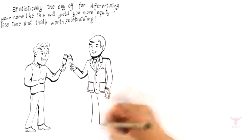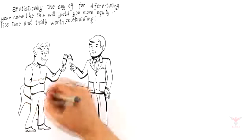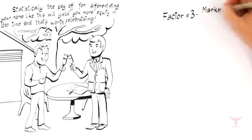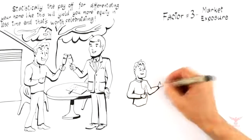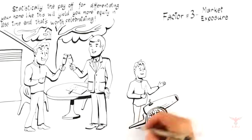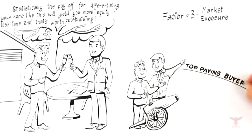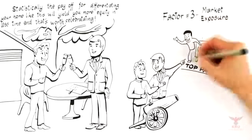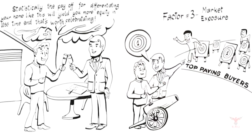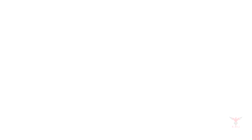Moving on to factor number three, market exposure. Once your home has been differentiated to target top-paying buyers like a loaded cannonball, it's ready to fire. But this next factor ensures when you launch your home onto the market, it's aimed at the right target. This requires you to be especially careful when selecting a professional. Here's why.